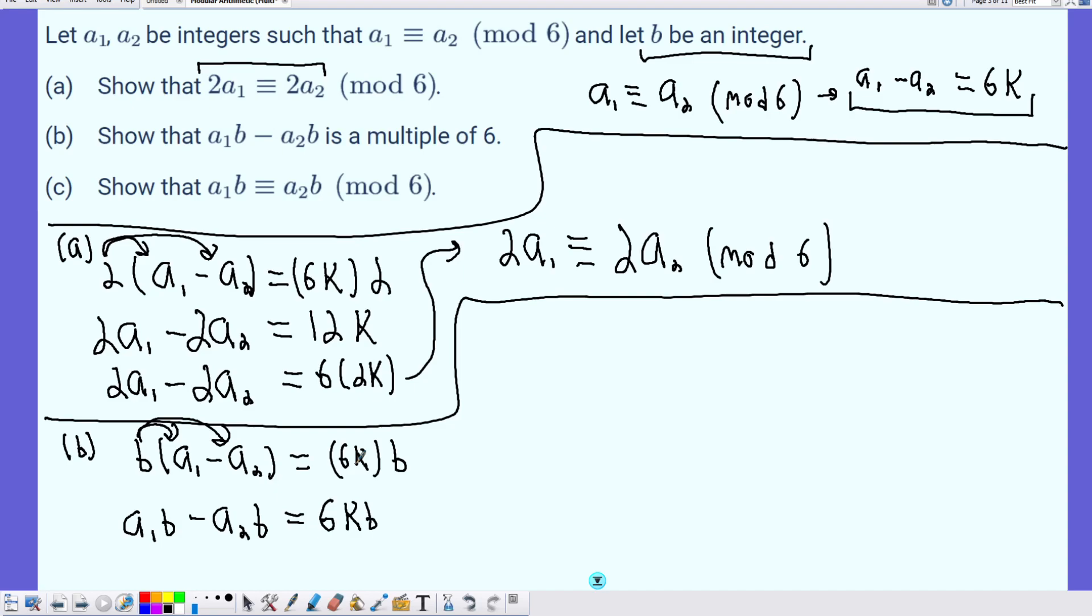Now, part C says to show that A1B is congruent to A2B mod 6. But really, that's what we just did. Since we have shown that A1B minus A2B, the difference of those two values is a multiple of 6, that proves that they're congruent.